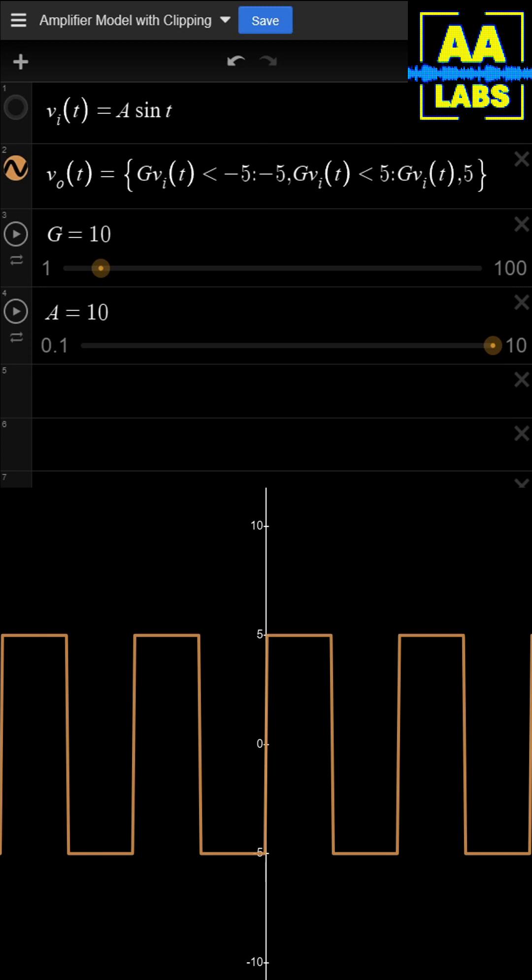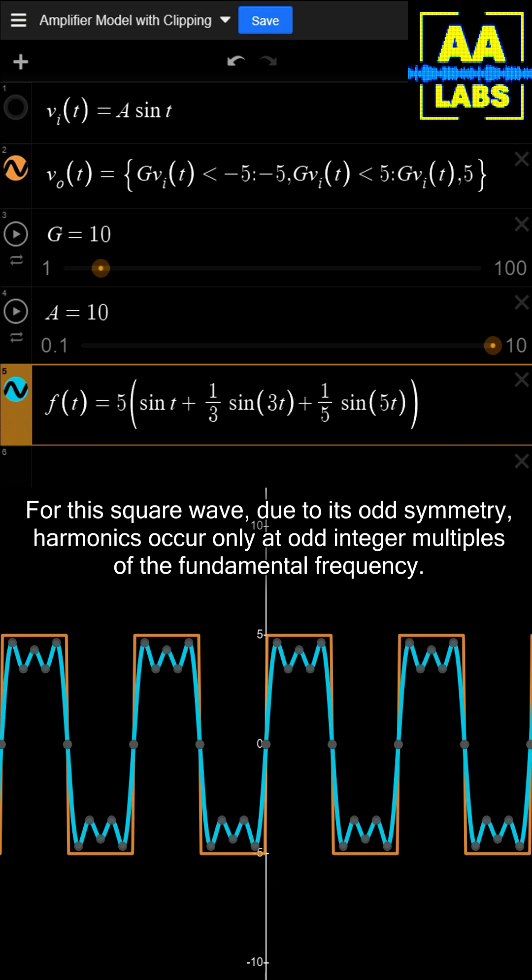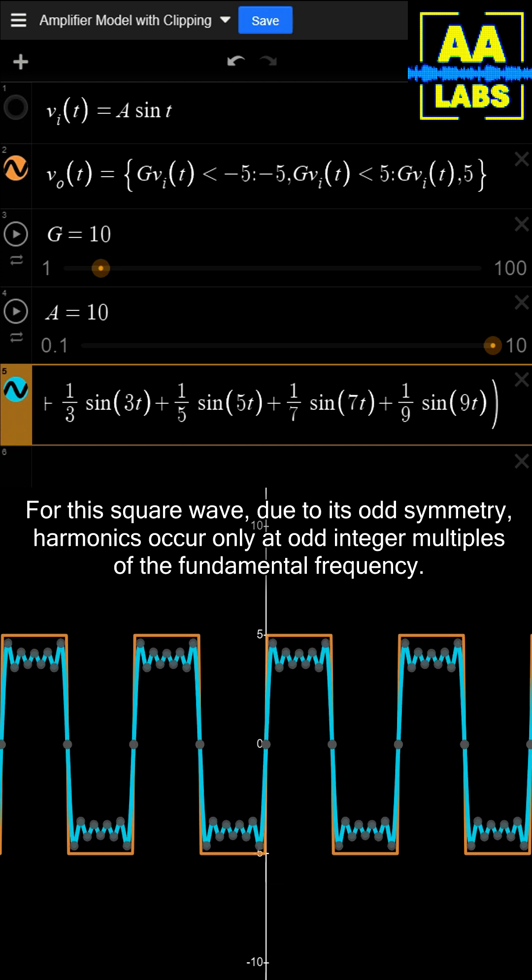Whenever a waveform is not a pure sinusoid but still has a fundamental frequency, that is, it repeats itself at a constant interval, it contains multiple frequency components, each at an integer multiple of the fundamental frequency.